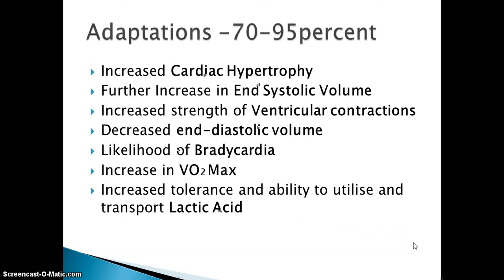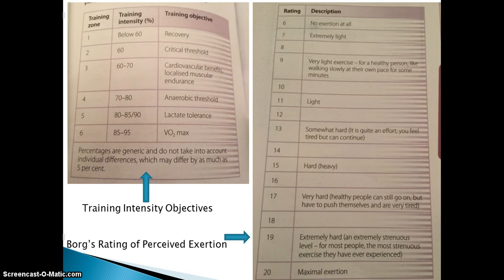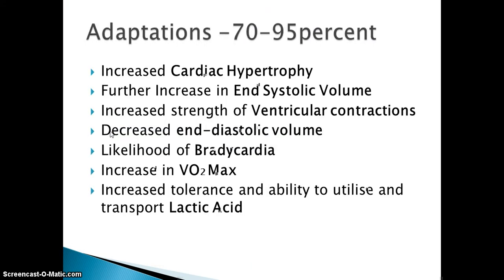If we think now about someone who's training at 70% to 95% — thinking back to that slide, we're now looking at someone working in training zone 4 and 5, and right up to number 6 as well — you're going to see some similar things. We'll come back to systolic volume and diastolic volume in the lesson. We had cardiac hypertrophy earlier, but we're talking about an even greater increase in the size and strength of the heart. Think about the increased strength of ventricular contractions and how that ties into stroke volume in particular.